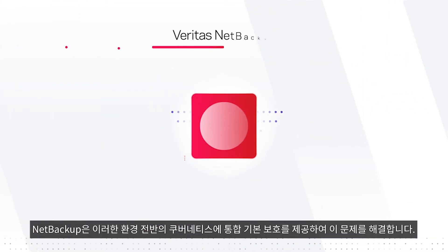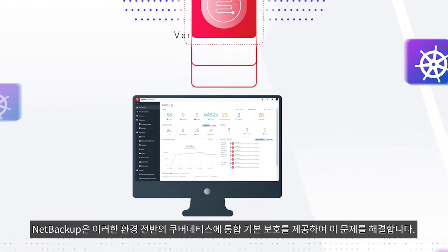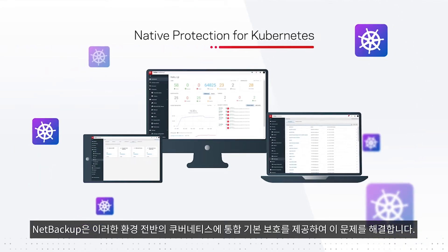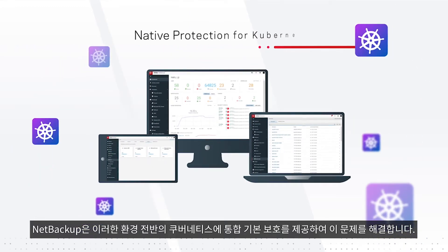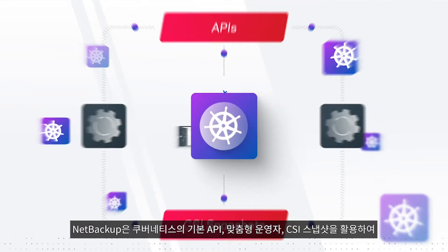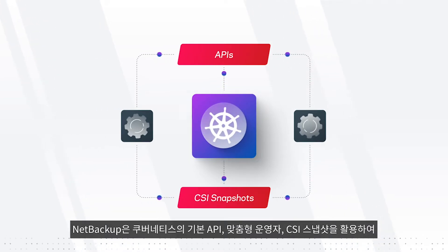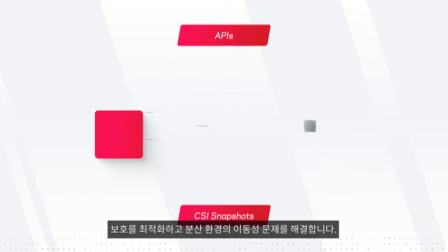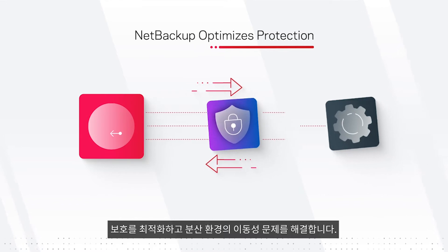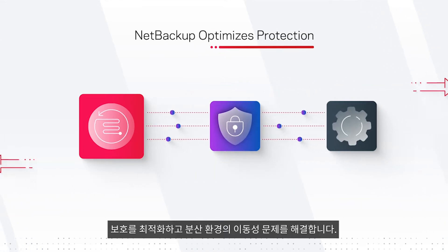NetBackup solves this challenge, with integrated native protection for Kubernetes distributions across environments. By leveraging Kubernetes' native APIs, custom operators, and CSI snapshots, NetBackup optimizes protection and unlocks distribution mobility.